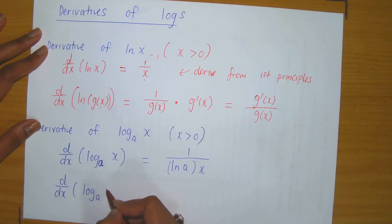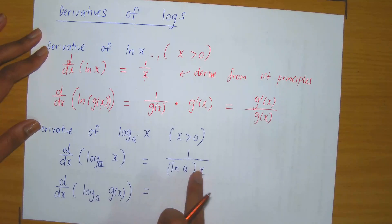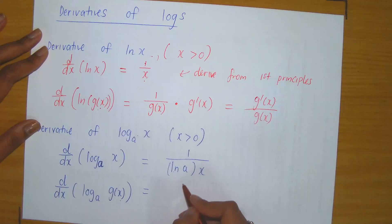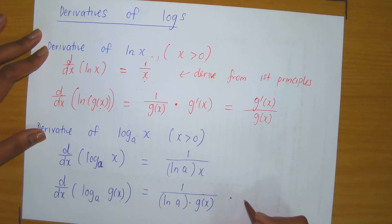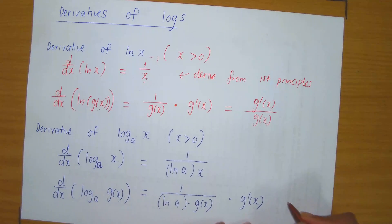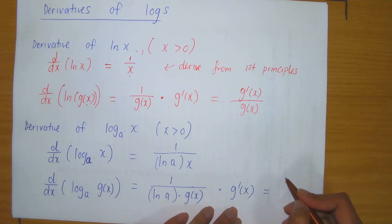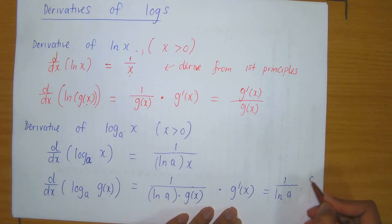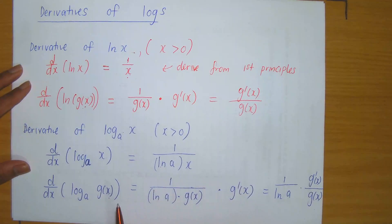Similarly, there is a chain rule formula. If we have log base a of a function g of x, then we can refer to g of x as our inner function and log base a as our outer. Applying the chain rule, it's the derivative of the outer — which is 1 over ln of the base — evaluated at the inner function g of x, times the derivative of the inner function. This simplifies to 1 over ln of a, times the derivative of the inner function divided by the inner function — another neat formula to remember.